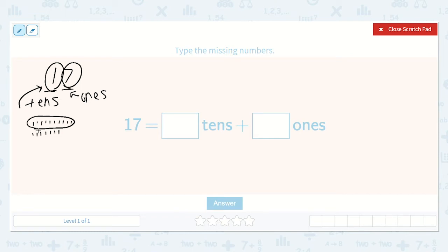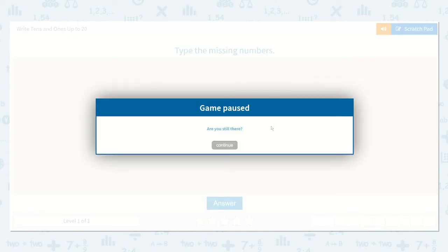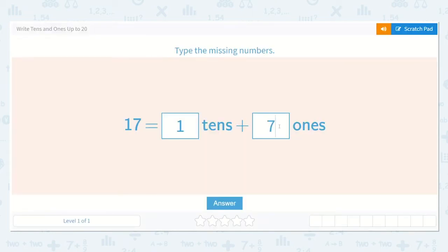Now let's count the next group. 1, 2, 3, 4, 5, 6, 7. So we don't have enough to circle another. So 17 is 1 ten and we have 7 ones left. So it would be 1 ten and 7 ones. Great. So let's write that. 1 ten and 7 ones. Amazing.